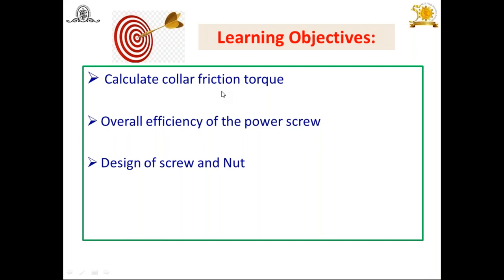The second learning objective is to find out the overall efficiency of the power screw. The word 'overall' is used because while finding out the efficiency, we are going to take into account the torque required to raise the load — that means to overcome friction between the threaded surface as well as the torque required to overcome the collar friction — and based on that we get the overall efficiency.